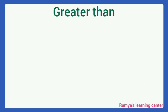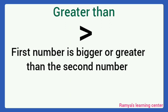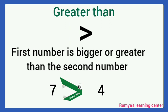Next, greater than. This is the greater than symbol. Here, the first number is bigger or greater than the second number. For example, 7 and 4. Which number does the alligator open to? Alligator opens to 7 — it is the bigger number. We put the symbol like this. This is greater than.